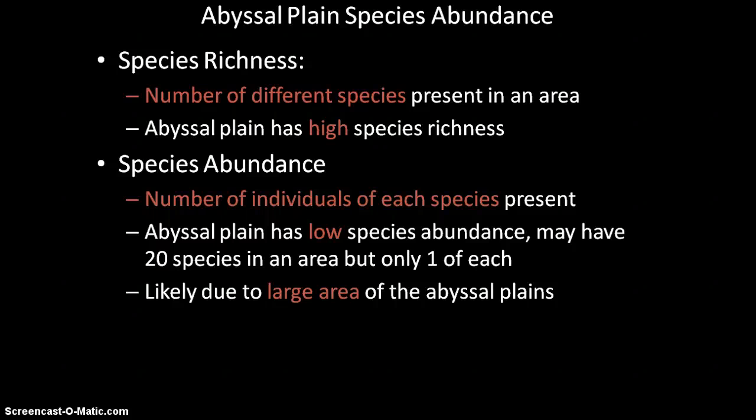For example, in a 20-square-foot area of the abyssal plain, species richness might be: a squid, a rattail fish, and an amphipod — three different species. Species abundance would be: three squid, five amphipods, and 20 rattail fish — the number of individuals present. The abyssal plain has really high species richness but low species abundance. We think that's because the abyssal plain is huge, so species are all spread out — there are many different types of things, but not very many of each.